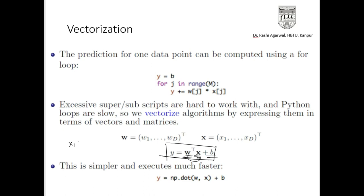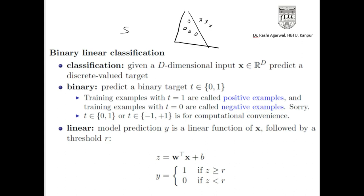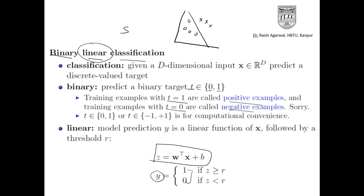Let's talk about binary linear classification. In binary linear classification, we are trying to find out the discrete value target. For binary values, I just have two targets — either 0 or 1. Anything with target 1 is a positive example; anything with target 0 is a negative example. In the linear part, we are predicting the linear function that we discussed. My target value will be based on a certain threshold: if it is greater than some threshold, I will classify it as a positive value; if it is less, I will classify it as 0. So through linear regression I am able to do classification by putting a threshold value.